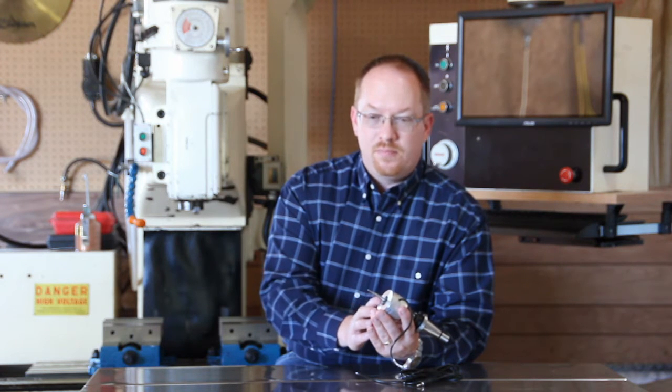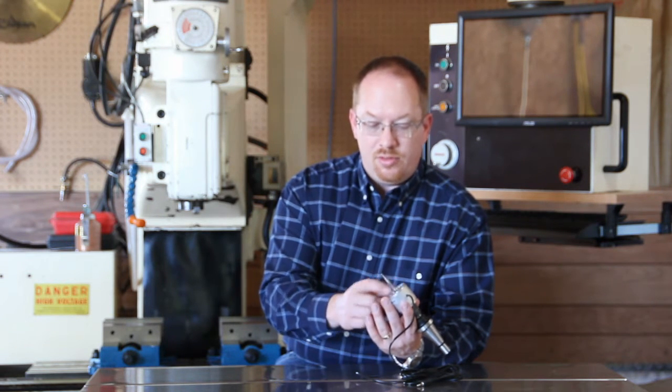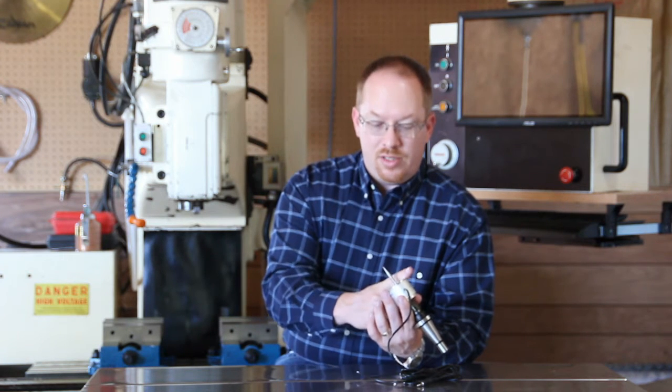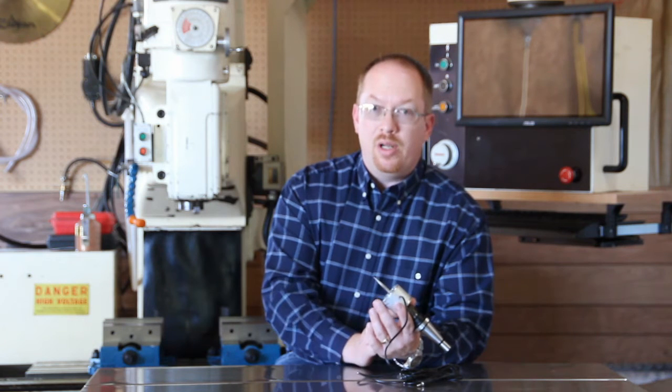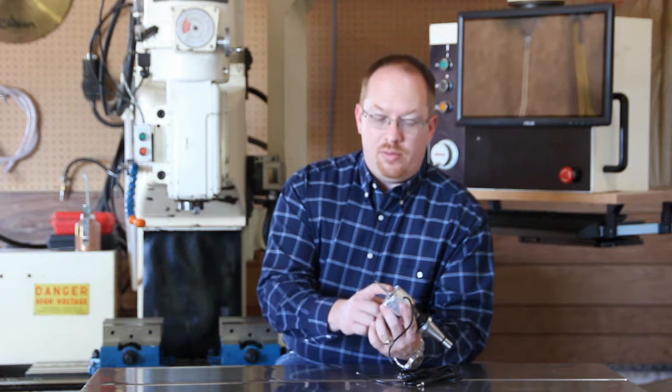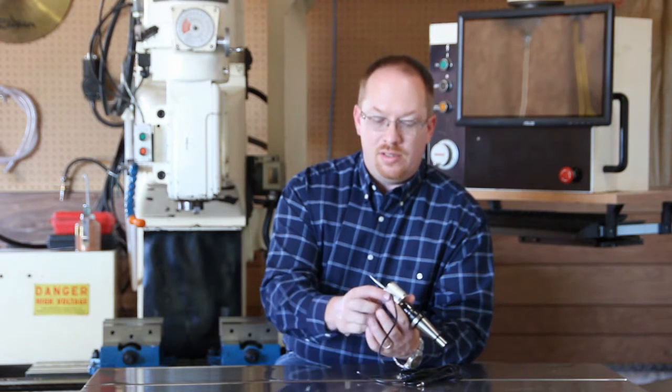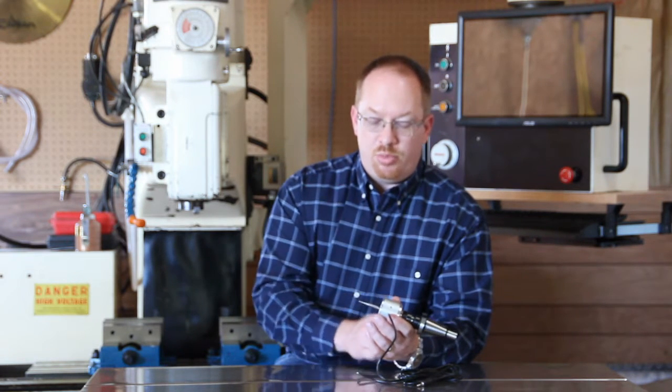We're going to use an allen screw to adjust these. We're going to use a straight edge to indicate the direction that the touch probe is pointing. I'll show you how we're going to do that. We're going to tape it on here so that we have a good reference as to the direction that the touch probe is pointing.